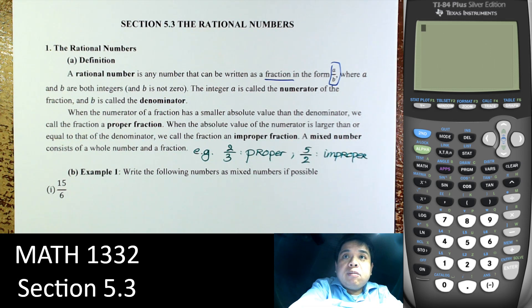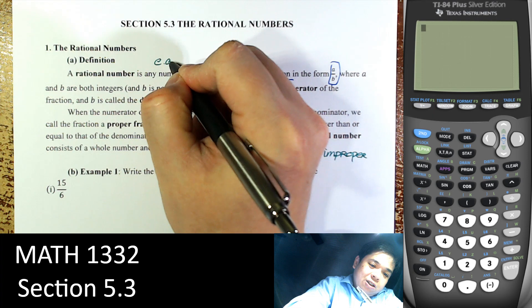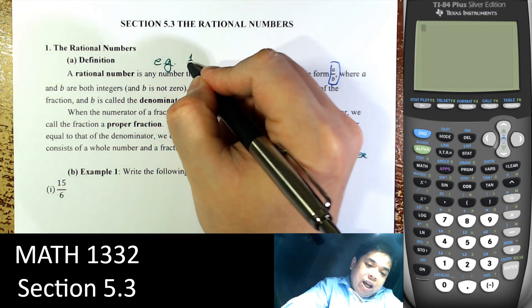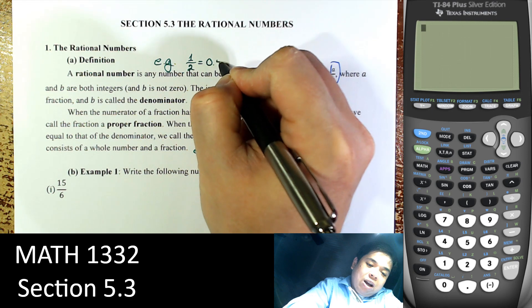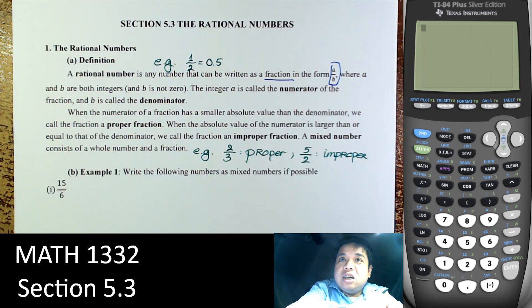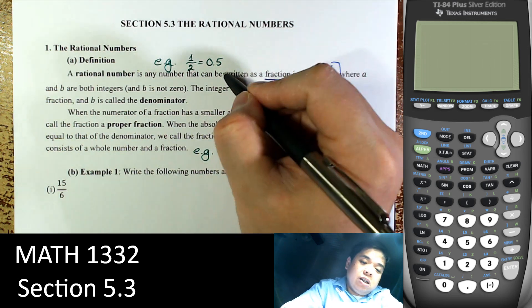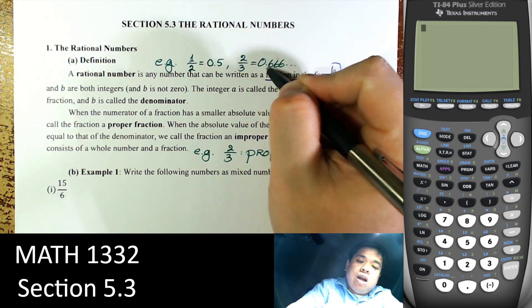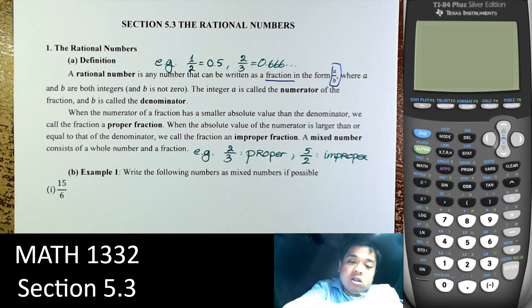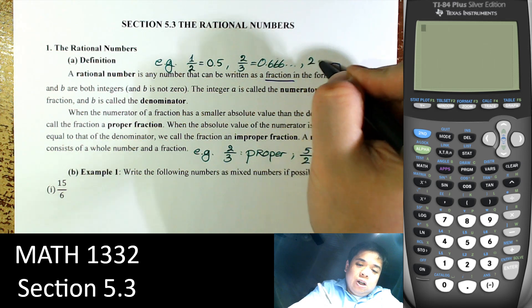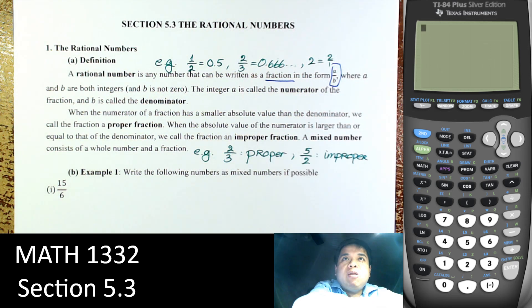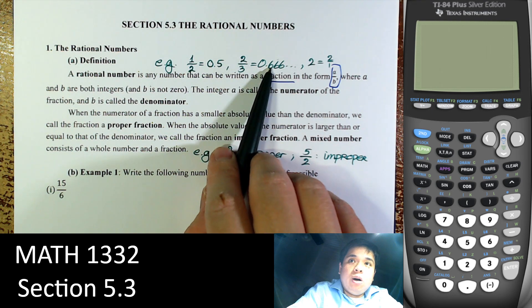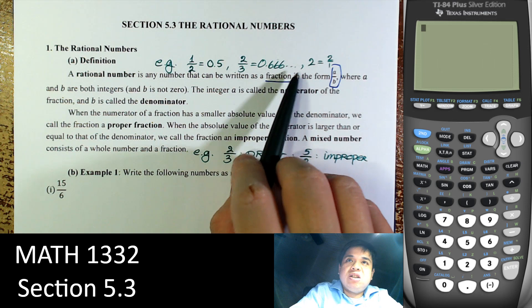Rational numbers — anything that can be put in fraction. So obviously 1/2 is a fraction; the decimal 0.5, either form, both are rational numbers. Or 2/3 is 0.6666 repeating, so that is a rational number. Even 2, which is 2 over 1, is also a rational number. The decimal could be terminated or repeating — anything that can be put in fraction is rational.